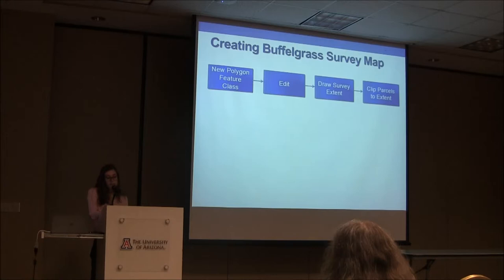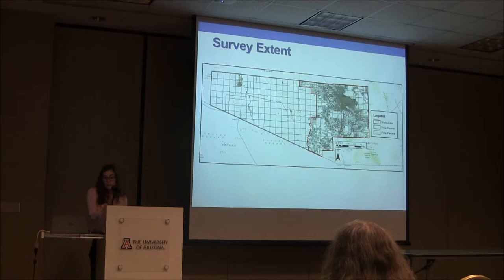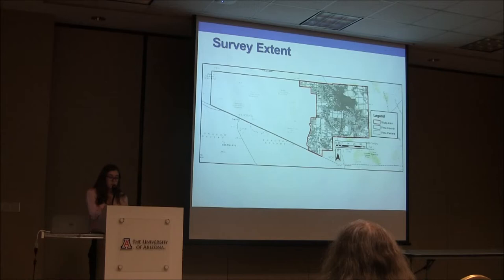Next, I created a new polygon feature class, used the editor toolbar, and drew a polygon surrounding the parcels I wanted to include in the survey. I then clipped the Pima County parcels to the survey extent polygon. I initially started with all parcels in Pima County, drew an extent around only the eastern parcels I wanted to include, and this is the resulting map. The reason I chose only eastern Pima County is because the majority of the population is located there — with a larger population, the pool for survey participants increases, and a buffelgrass wildfire in a densely populated area can have devastating consequences.